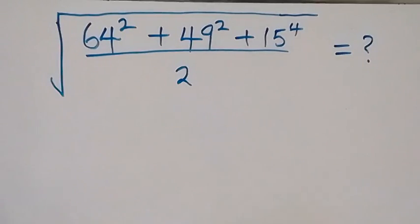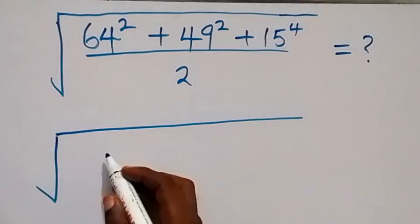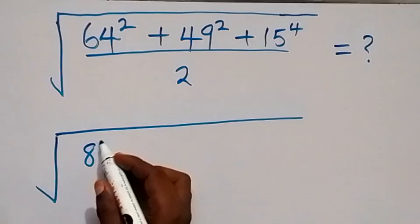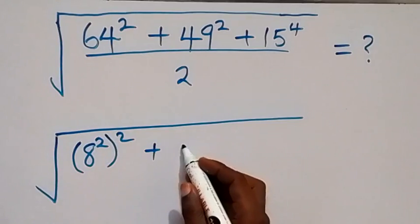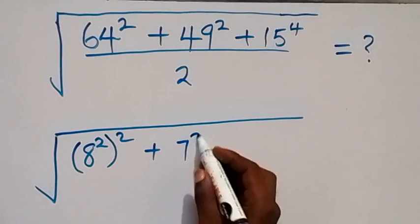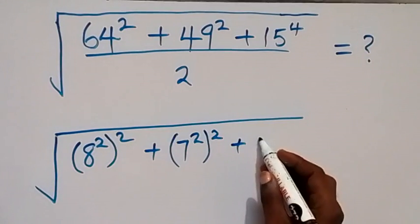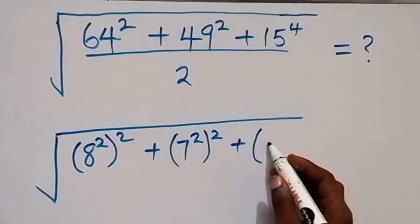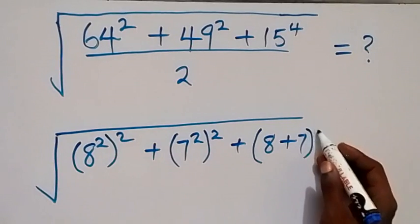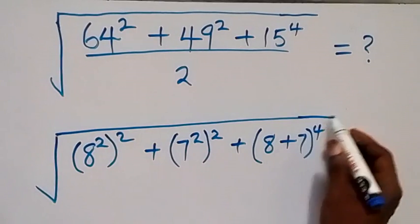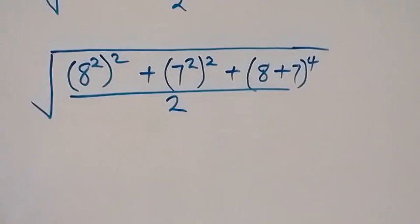Now here we can rewrite this. 64 can be written as 8 squared, then plus 49 can be written as 7 squared, then plus 15 we can separate as 8 plus 7, in a close bracket, raised to power 4, divided by 2.